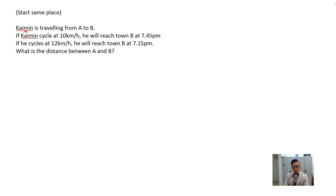Let's look at the next question. Kaiman is traveling from A to B. If Kaiman cycles at 10 kilometers per hour, he will reach town B at 7:45. If he cycles at 12 kilometers per hour, he will reach town B at 7:15 — so cycling faster means arriving earlier. What is the distance between A and B? As usual, draw your distance, speed, time triangle. This is also starting at the same place, traveling from A to B.